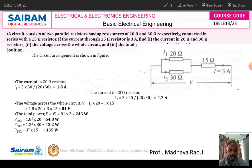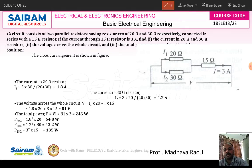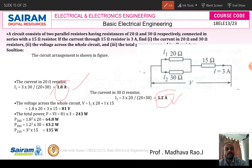Use the current division principle: the current flowing in one resistor is equal to the total current multiplied by the opposite resistor value, divided by the total resistance. So I1 = 3 × 30 / (20 + 30) = 1.8 amperes. The current flowing in the 30 ohm resistor is 3 × 20 / (20 + 30) = 1.2 amperes. Adding these: 1.8 + 1.2 = 3 amperes, which confirms the total current.